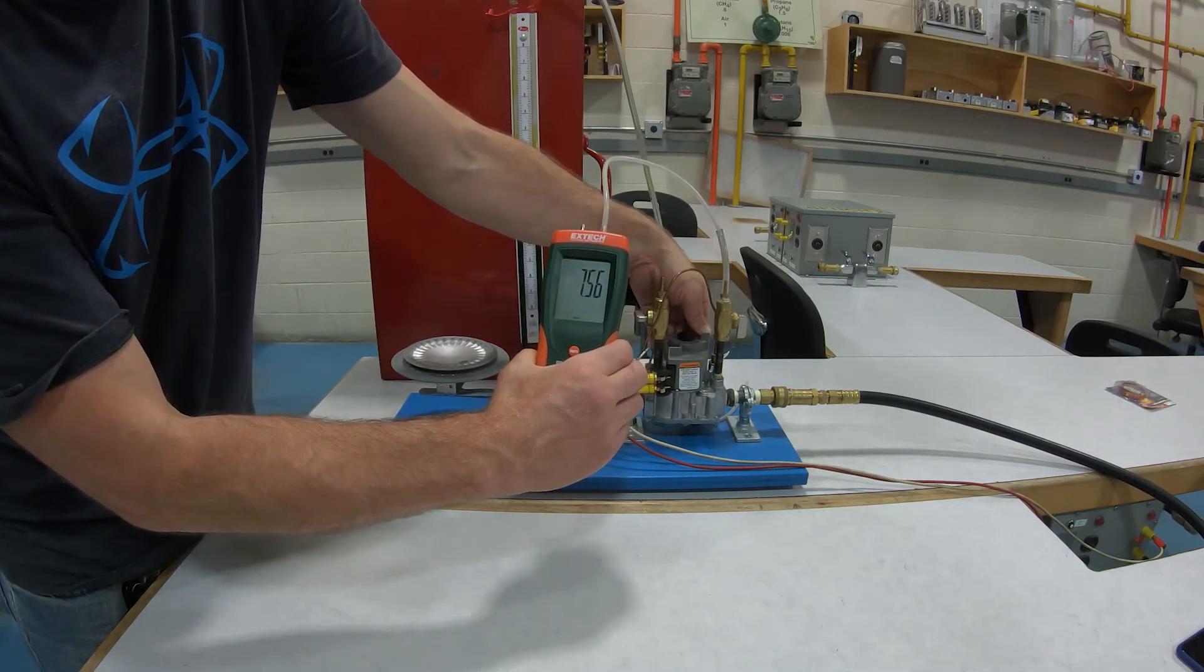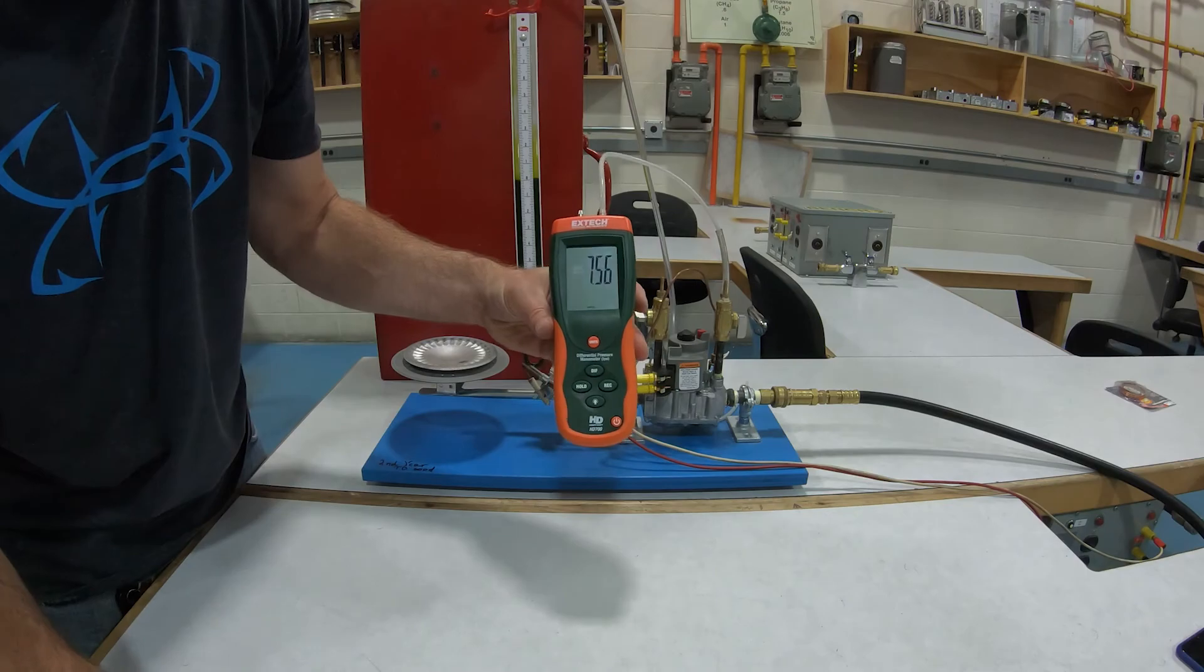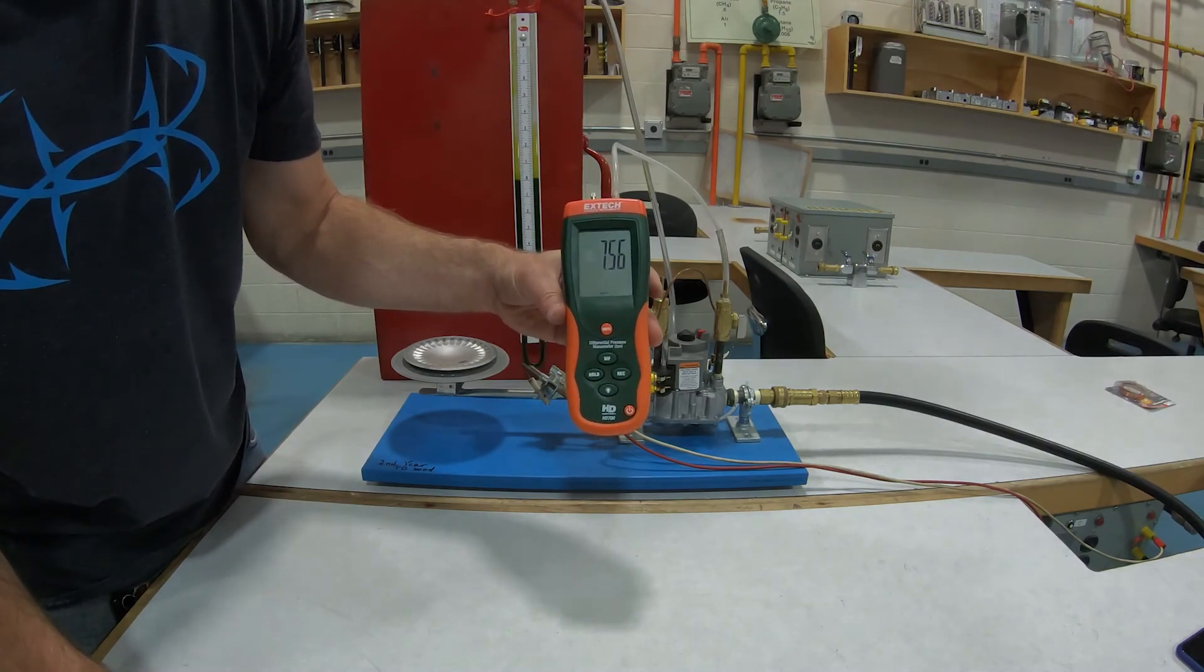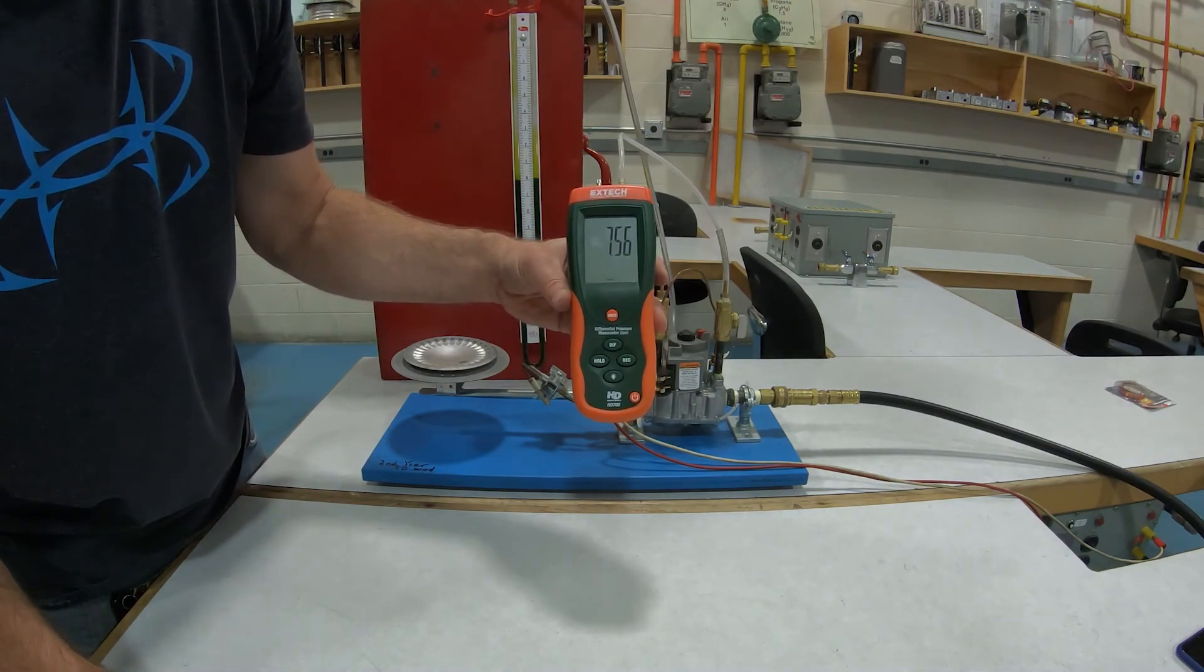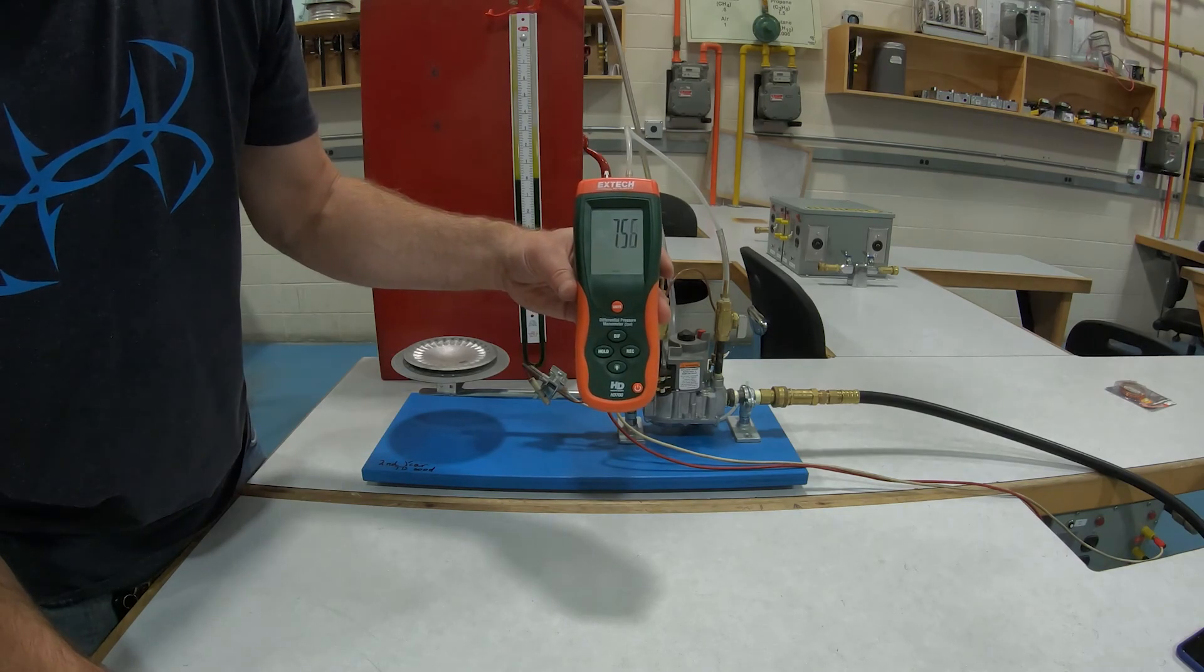All right, so this manometer says that I'm getting 7.56 inches of water column. It's a little bit more accurate than the water tube, and there you are.